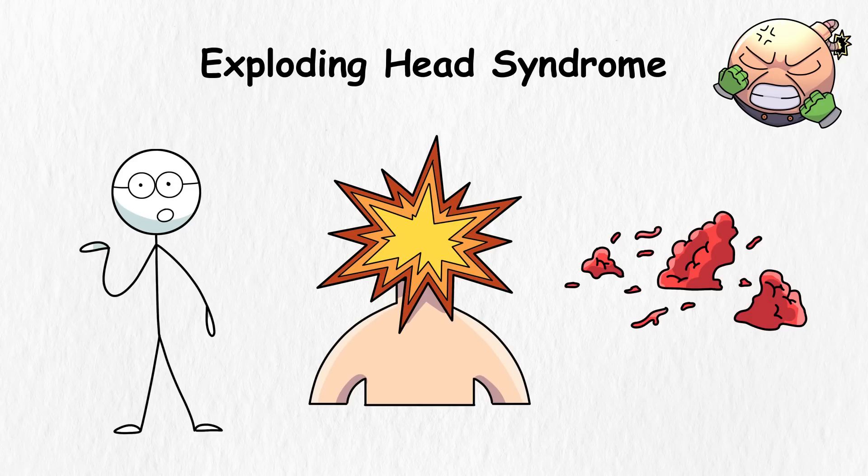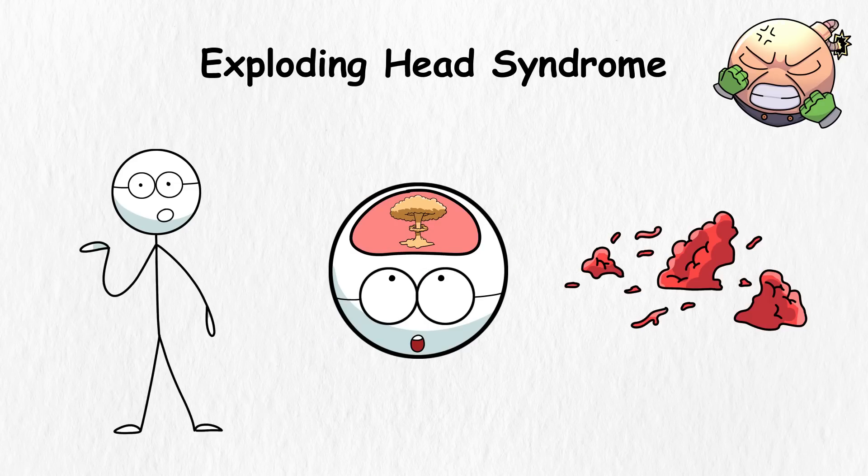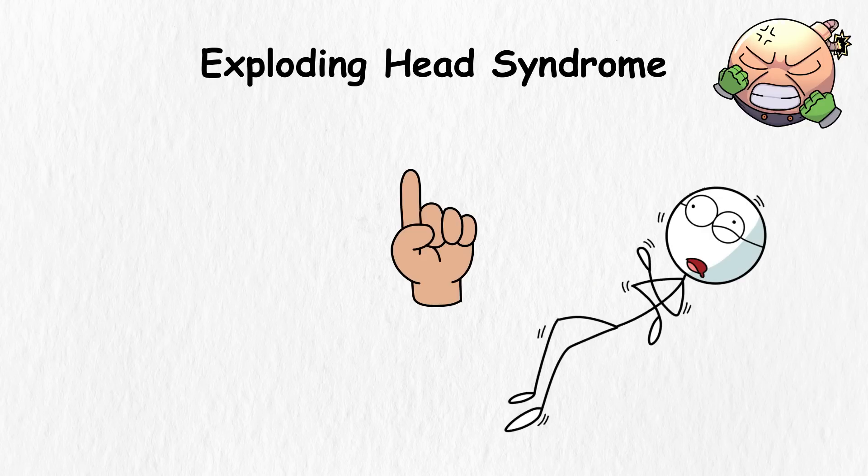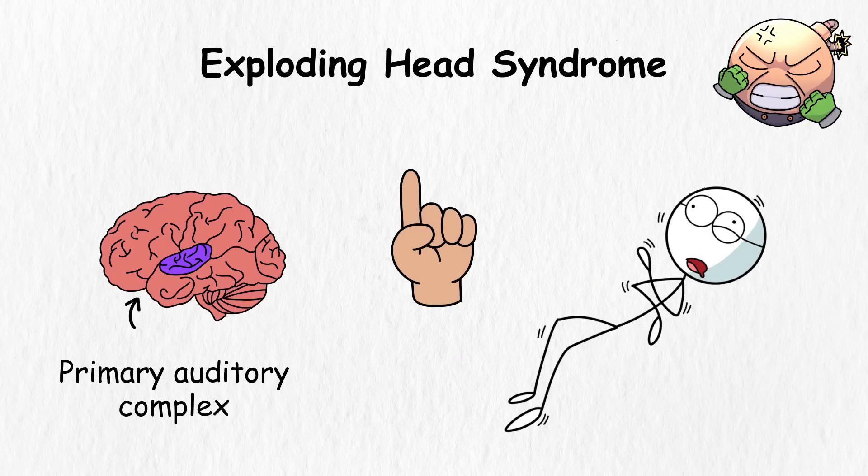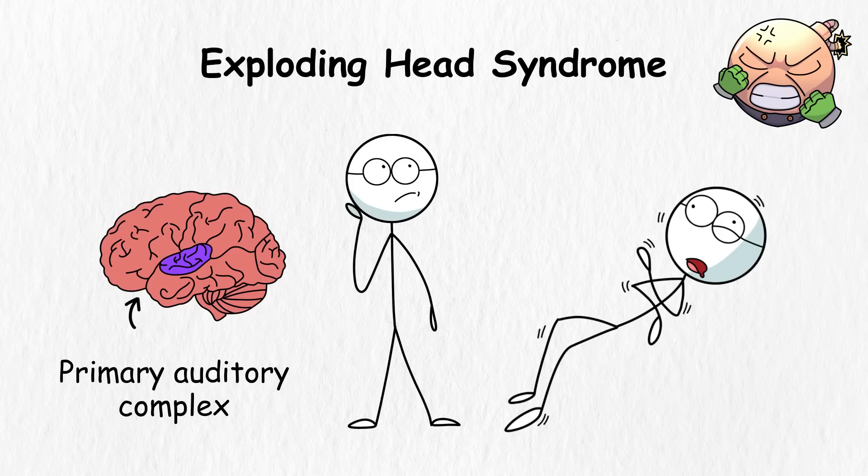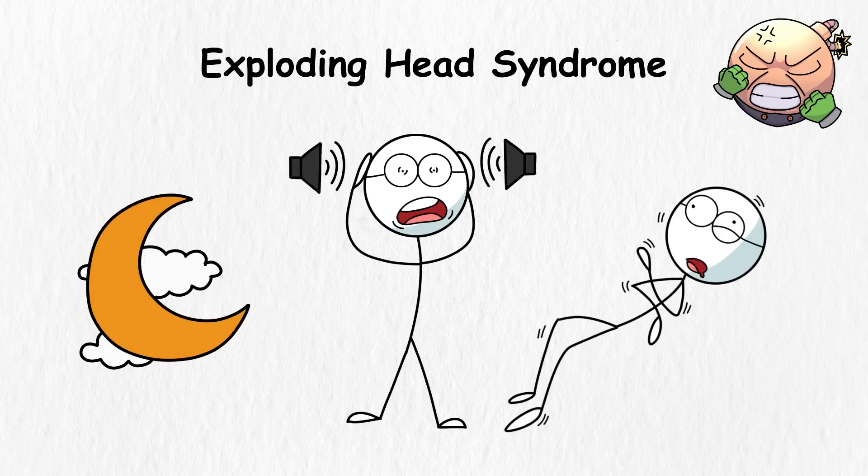Instead, everything is just happening inside of your head. Scientists, however, aren't sure what causes this problem. One theory is that there are small seizures in the primary auditory complex, the part of the brain that processes sound. This makes you think there are noises around you, even though it's a silent night.